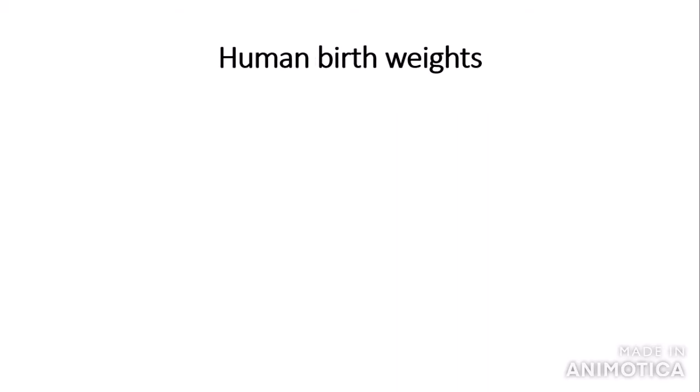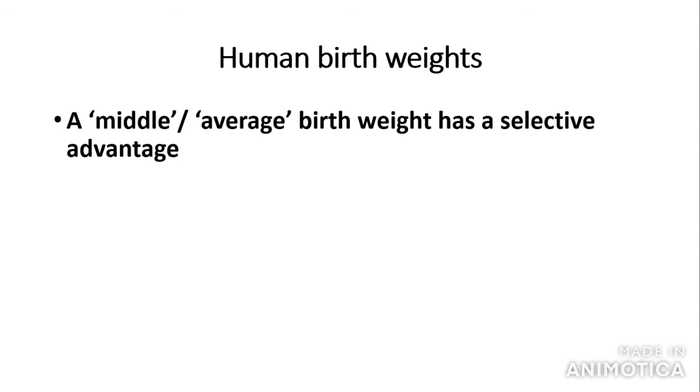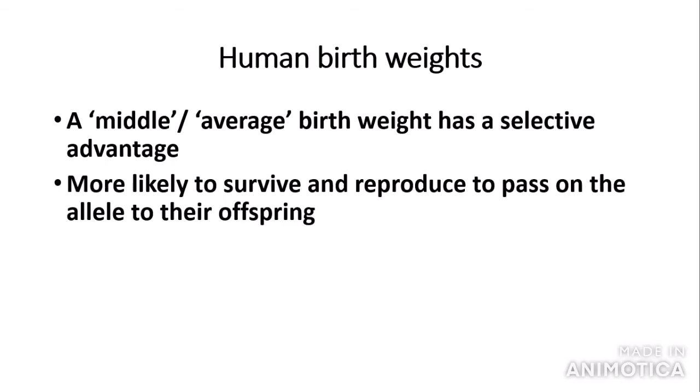You need to know how to exemplify this principle through the example of human birth weights. A middle, or average, birth weight has a selective advantage as it decreases the possibility of health complications. This means that babies with the allele for average birth weight are more likely to survive and reproduce to pass the allele to their offspring.